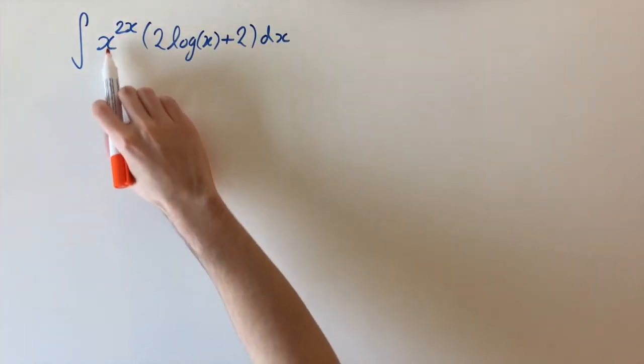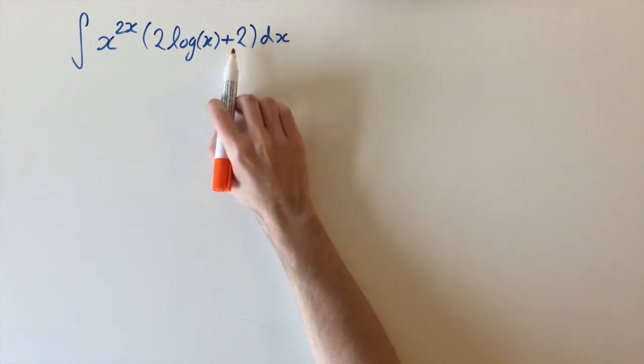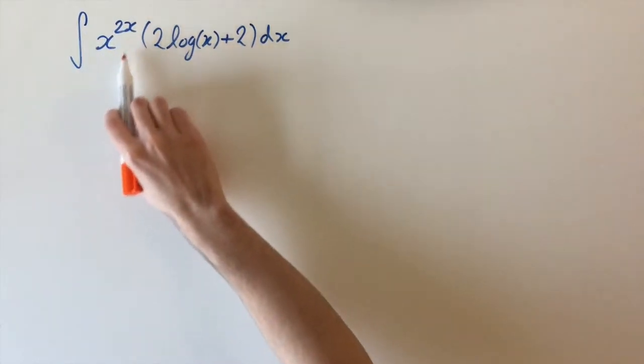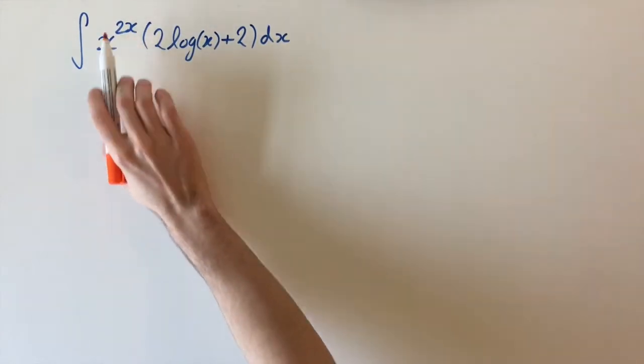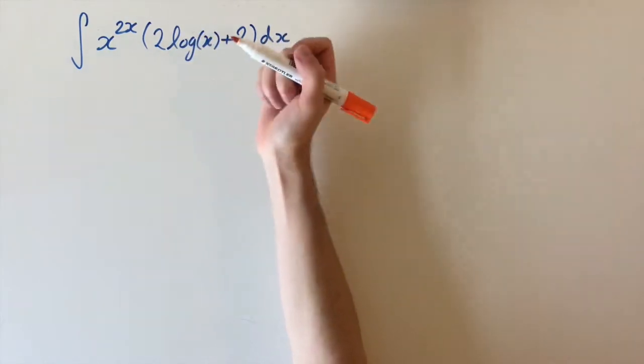We have the integral of x to the power of 2x multiplied by 2 log of x plus 2 dx. This is a tricky integral because we have this factor x to the power of 2x, which is a function of x to the power of another function of x.